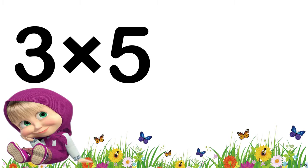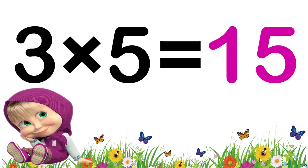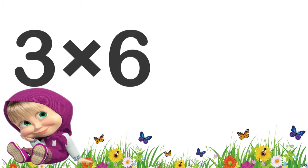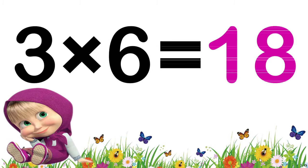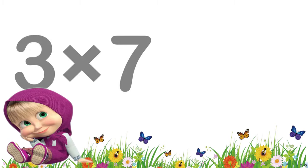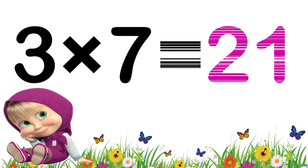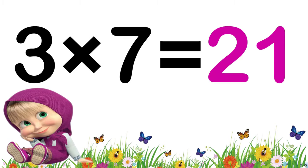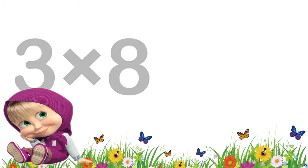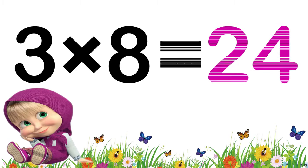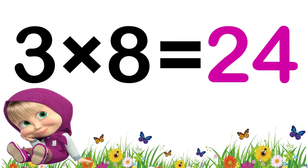Three fives are fifteen. Three sixes are eighteen. Three sevens are twenty-one. Three eights are twenty-four.